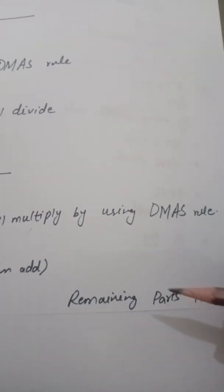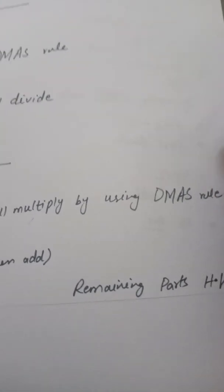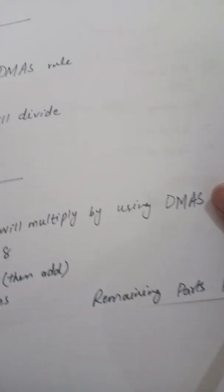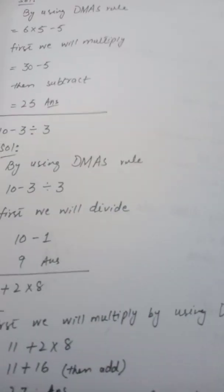So okay students, here our question is complete. Remaining parts are in your homework. Okay? Part number A, C, D, E I have done and F, G, H are in your homework.